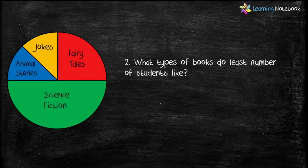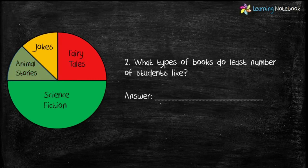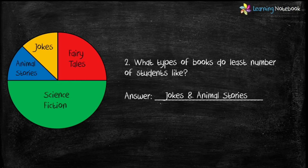Question two: what types of books do the least number of students like? Both jokes and animal stories are represented by one-eighth of the circle, which is the least of all parts. Therefore, jokes and animal stories are the types of books that the fewest students like.